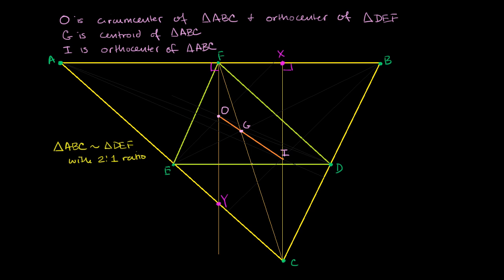What I want to do in this video is focus on triangle ABC and prove that the circumcenter of this triangle — the intersection of its perpendicular bisectors — the centroid — the intersection of its medians — and the orthocenter — the intersection of its altitudes — all sit on the same line. That OG and GI are two segments making up a larger line segment, which is part of the Euler line.